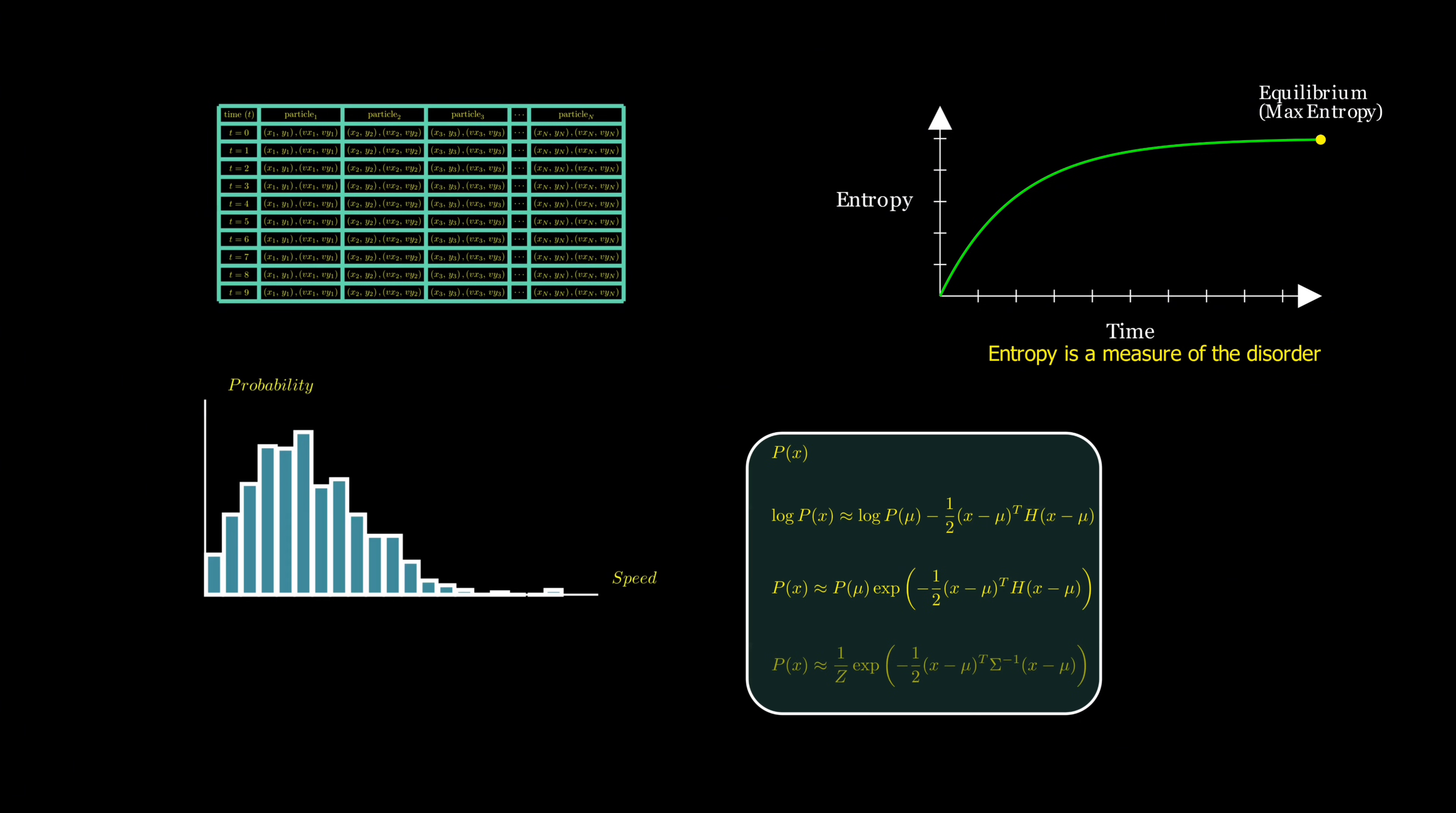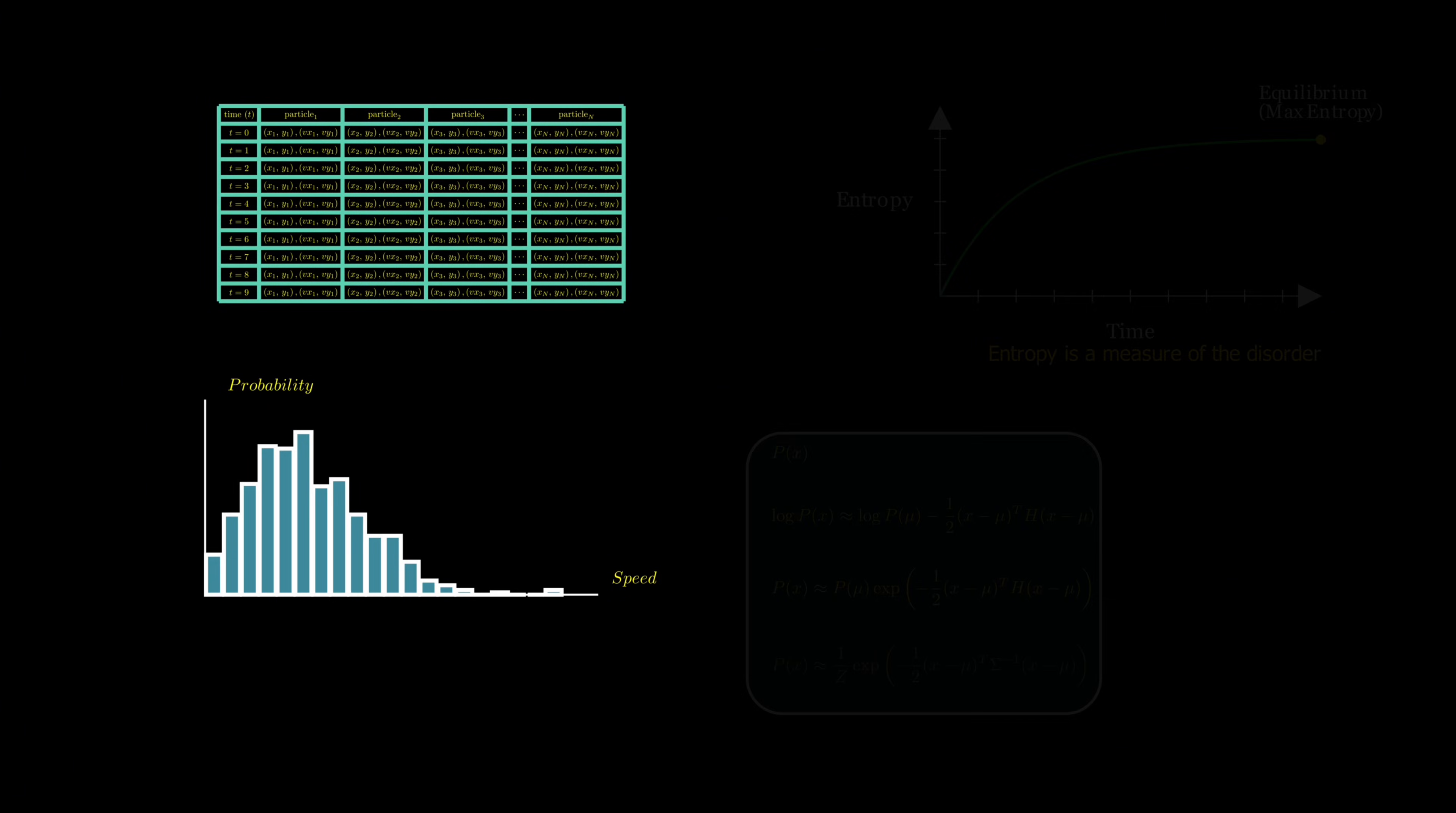But this leaves us with a nagging question. If we never know the true probability, how can we actually estimate the unknown constants of the Taylor expansion that later appear as the parameters of our models? In other words, how do we use data to find the best values for the unknown constants of the linear regression? How do we know we're not just guessing blindly?